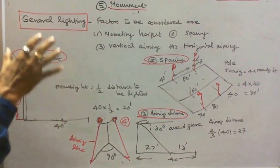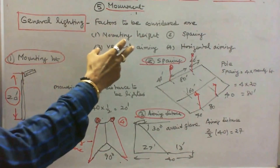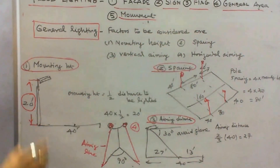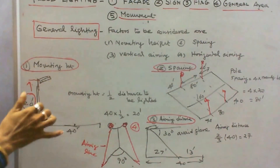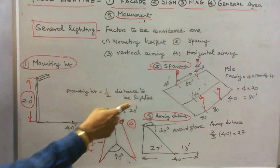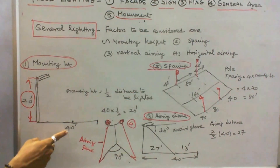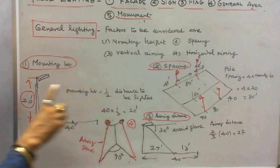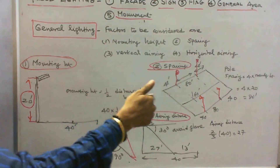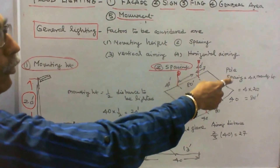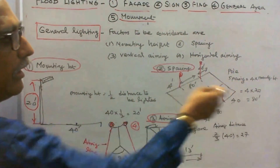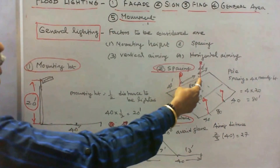The fourth type is general lighting. Factors to be considered are mounting height, spacing, vertical aiming, and horizontal aiming. First, we find the mounting height. The thumb rule is mounting height equals 1/2 the distance to be lit. If the distance to be lit is 40 feet, then 40 times 1/2 equals 20 feet. For spacing, the thumb rule is pole spacing equals 4 times the mounting height: 20 times 4 equals 80 feet — the distance between two poles is 80 feet.